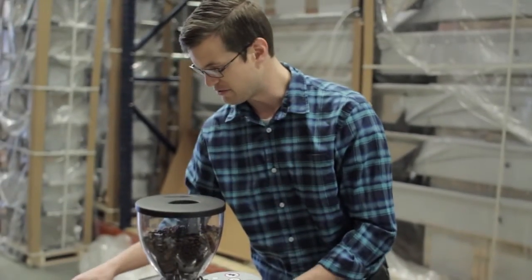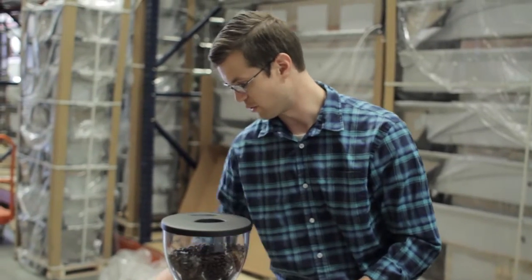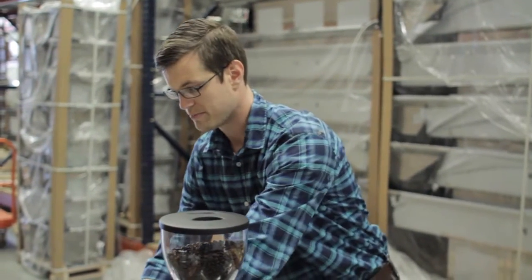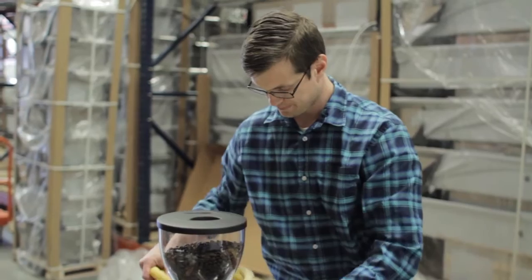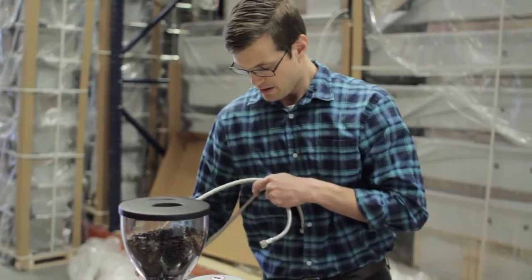You won't need any of these parts, the reservoir or the water line. A braided hose is included with your espresso machine, so go ahead and find that now.